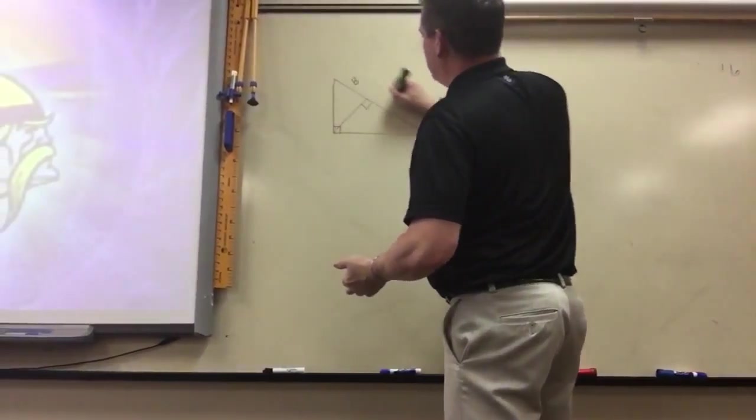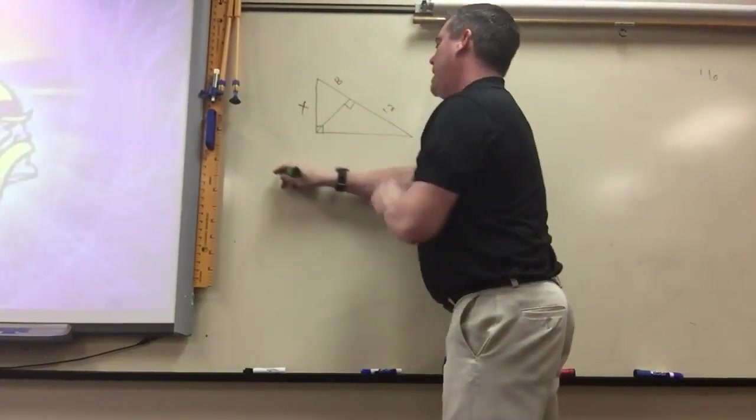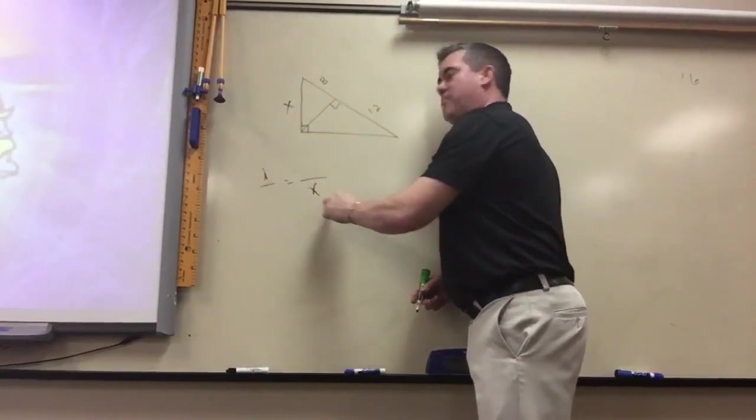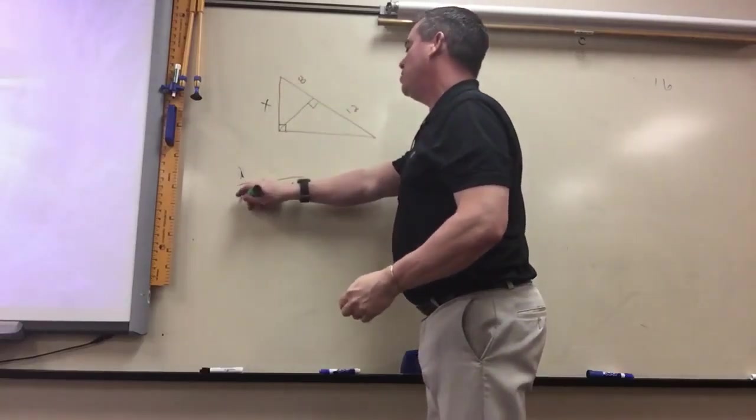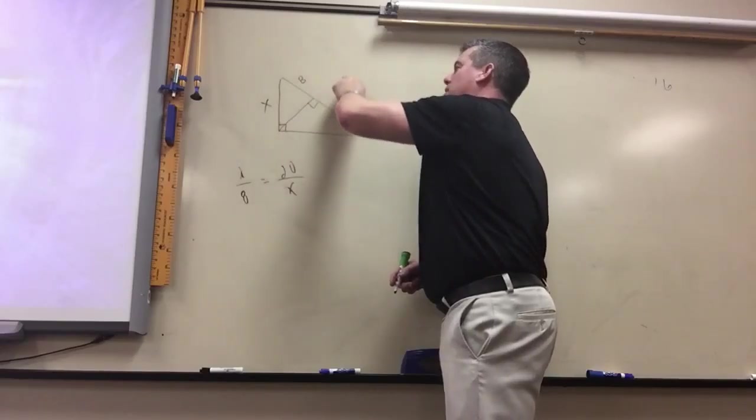So if this is 8 and this was 12, if you were looking for x, x is a geometric mean, so it goes in there twice. Doesn't matter if it's this way or that way, just make sure they're kitty corner. And then 8 and 20, right, the piece hooked onto it and then the entire length.